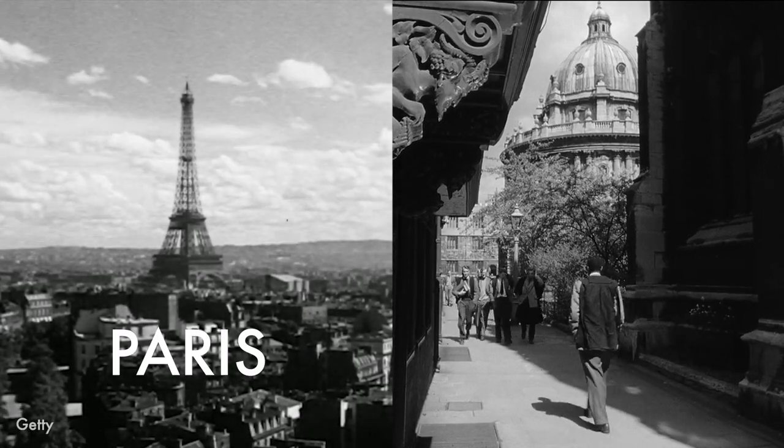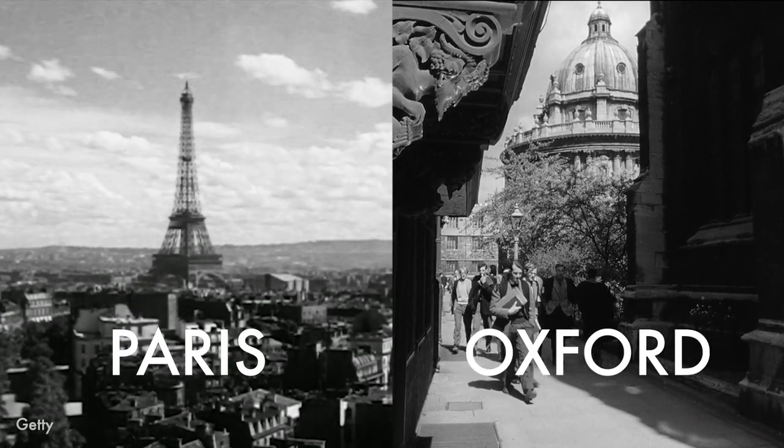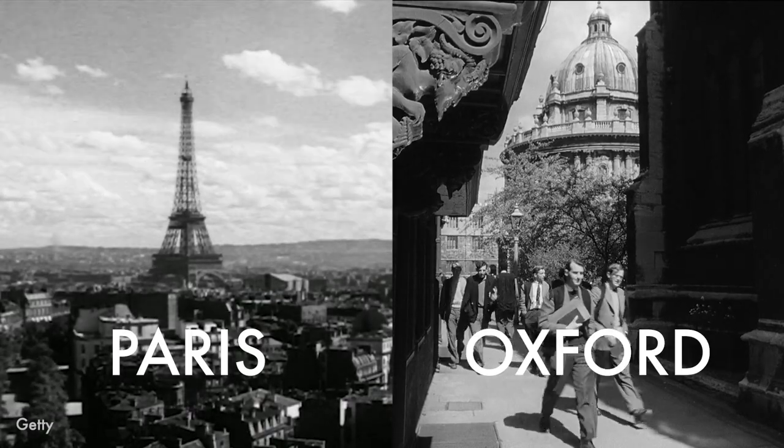So when you search for something on the internet, you're using a process that actually was invented about 800 years ago, round about the year 1230. And when it was invented, it was invented twice. It gets invented in Paris and it gets invented in Oxford, and they're two subtly different versions of the same thing.